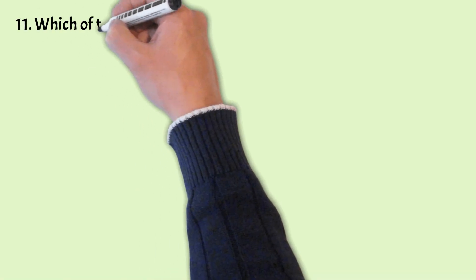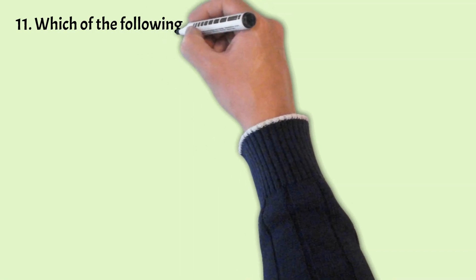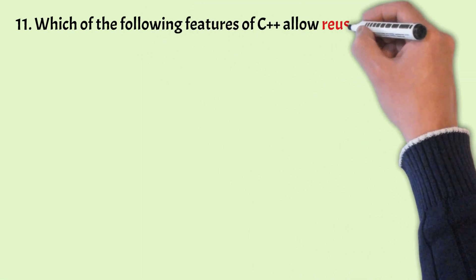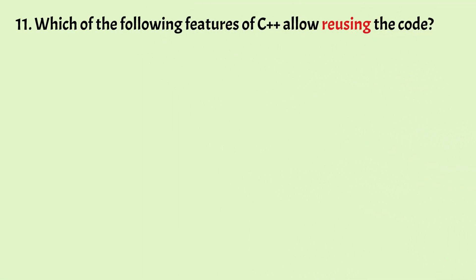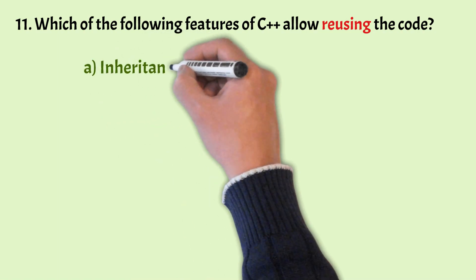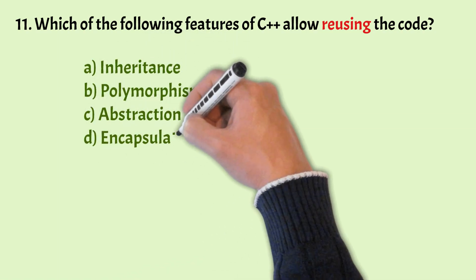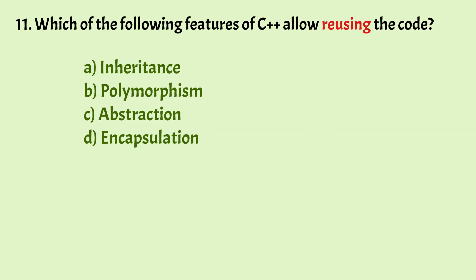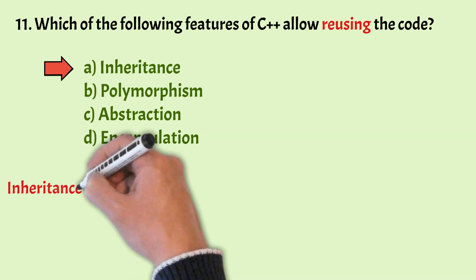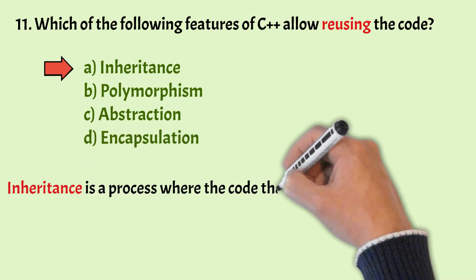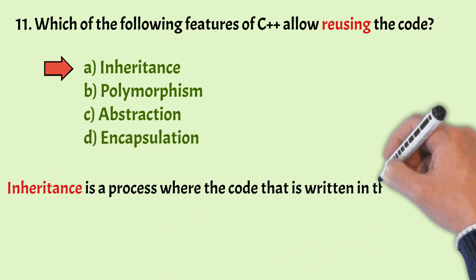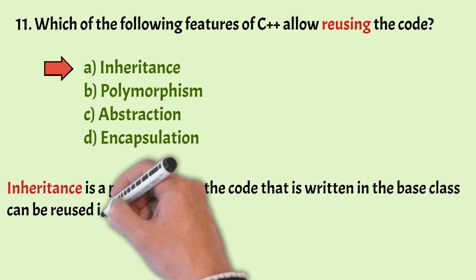Which of the following features of C++ allows reusing of code? The options are inheritance, polymorphism, abstraction and encapsulation. The correct answer is option A, that is inheritance. Inheritance is a process where the code written in the base class can be reused in the derived class.